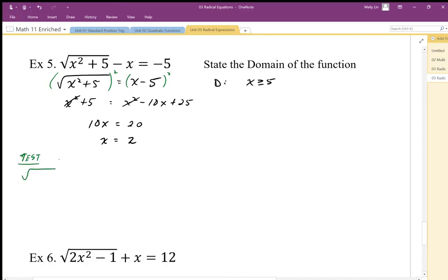If I test x equals 2, I get square root of 2 squared plus 5 minus 2 equals negative 5.